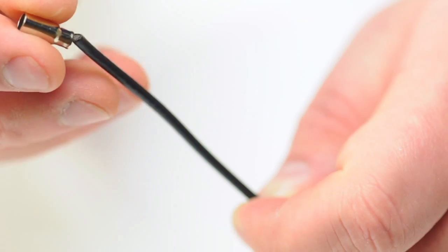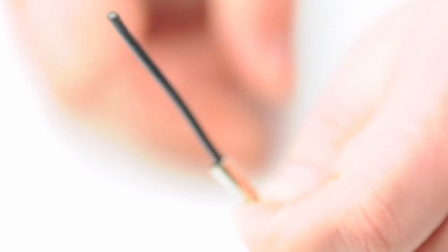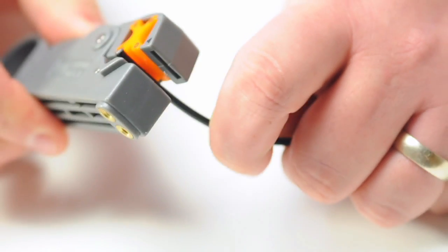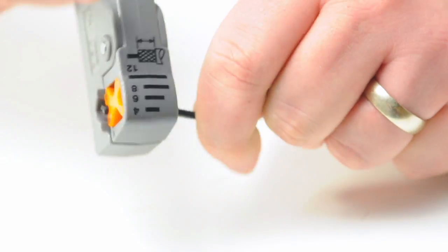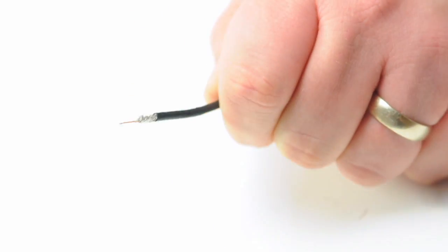Start by inserting the ferrule over the outer jacket of the cable. Then using your cable stripper, strip back the outer jacket and dielectric. The advantage of using a cable stripper is that it will strip back the jacket and dielectric at the same time.